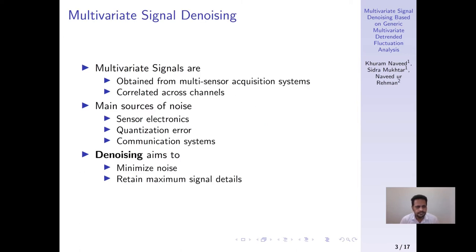Multivariate signals are generally obtained using multi-sensor data acquisition systems, where multiple sensors are attached to a single source to obtain its various aspects. As a consequence, the resulting signals are correlated and hence are processed as a single multivariate signal.